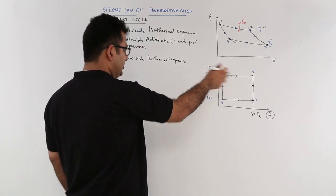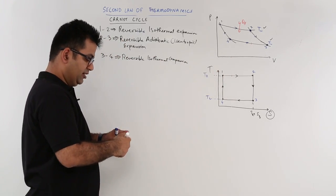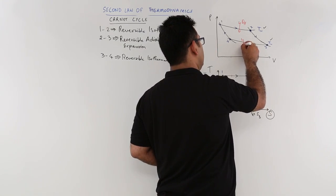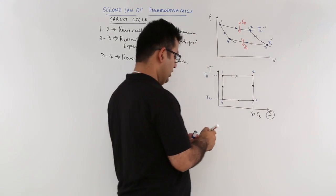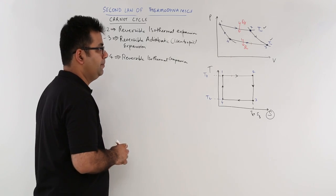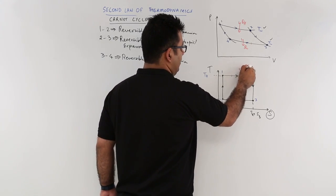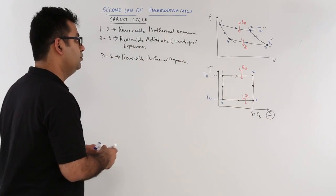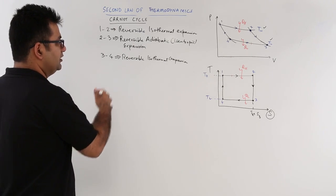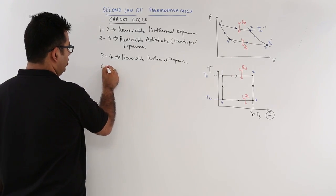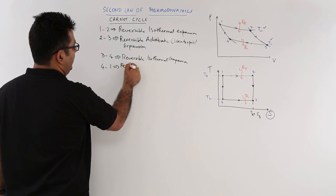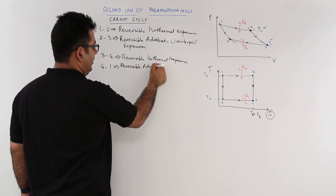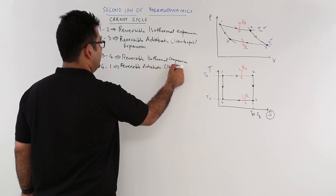Because it is being compressed, the gas inside becomes hot. So it will now reject heat. So this is the heat rejection at temperature Tl. You will have some heat over here and some heat over here. So let's move ahead. 3 to 4 is isothermal compression and then 4 to 1, it again becomes reversible adiabatic or we also call it isentropic compression.